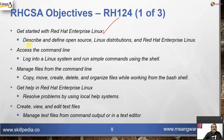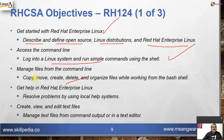First: get started with Red Hat Enterprise Linux — describe and define open source Linux distributions and Red Hat Enterprise Linux. Second: access the command line — log into a Linux system and run simple commands using the shell. Third: manage files from the command line — copy, move, create, delete, and organize files from the Bash shell. Fourth: get help — resolve problems using local help systems. Fifth: create, view, and edit text files using an editor of your choice, such as nano or vi.